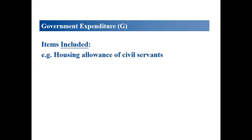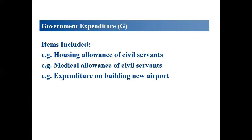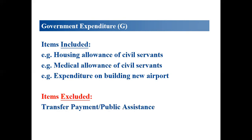Government expenditure includes house allowances for civil servants, medical allowances, and building new airports. What is excluded is any transfer payment or public assistance, because it is cash and does not represent current production. Transfer payments are not included in our GDP calculation.